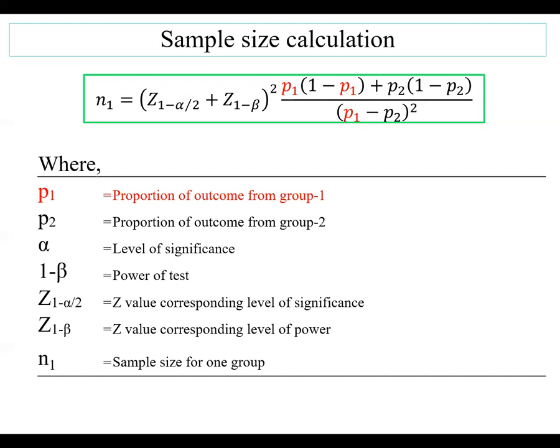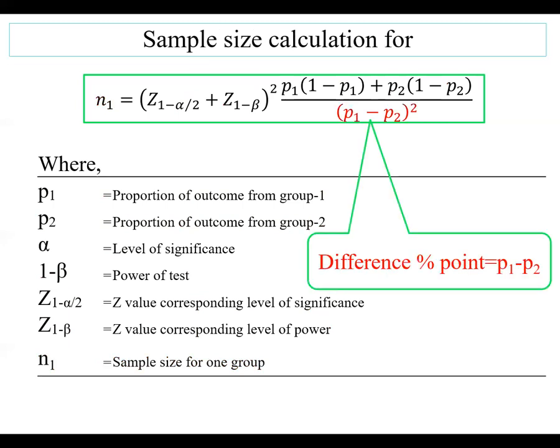Where P1 is proportion of outcome from group 1, P2 is proportion of outcome from group 2, alpha is the level of significance, 1 minus beta is the power of the test. Z alpha is the Z value corresponding to level of significance. Z beta is the Z value corresponding to level of power. And N is the appropriate sample size in one group. This is the difference percentage point or effect size.